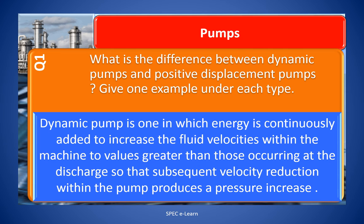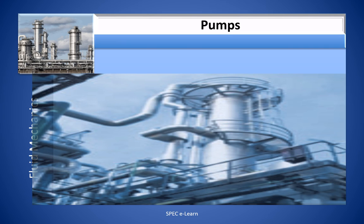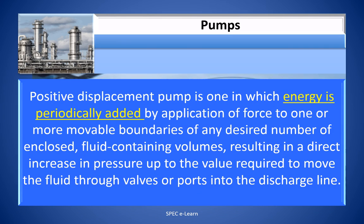The dynamic pump is one in which energy is continuously added to increase the fluid velocities within the machine to values greater than those occurring at the discharge, so that subsequent velocity reduction within the pump produces a pressure increase. Positive displacement pump is one in which energy is periodically added by application of force to one or more movable boundaries of any desired number of enclosed fluid-containing volumes, resulting in a direct increase in pressure up to the value required to move the fluid through the valves or ports into the discharge line.